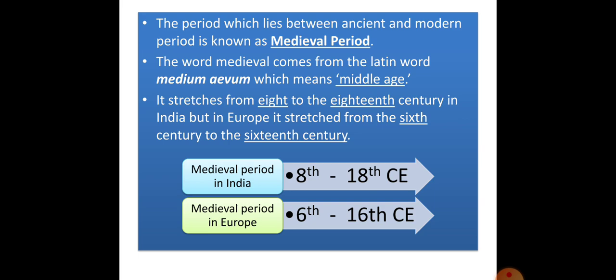Let us know about what was the medieval period, or when did it start. Medieval period stretches from 8th to 18th century in India, but it was quite different from Europe, because in Europe it stretched from 6th century to 16th century. So in India we assume medieval period from 8th century to 18th century, and in Europe it stretches from 6th century to 16th century.